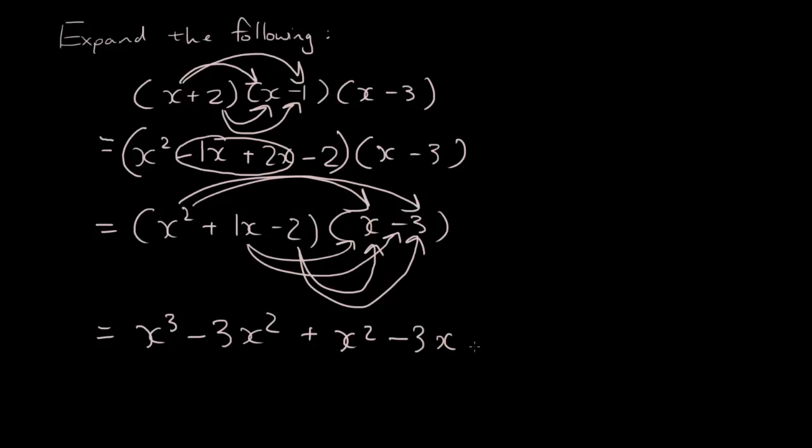Minus 2 times x is minus 2x, minus 2 times negative 3 is positive 6. And now I can combine these terms to give me x cubed minus 2x squared, because minus 3 and plus 1 becomes minus 2.